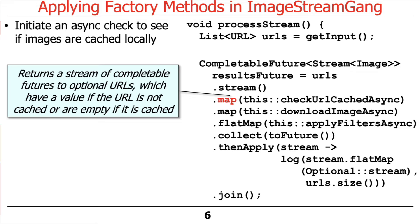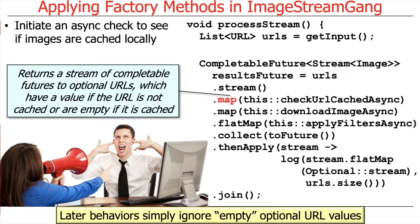The reasoning behind that is if we've already gone to the trouble of doing this before, we just want to ignore that URL. But if we haven't downloaded and filtered this URL before, then we want it to be present in the optional. The later behaviors here that come after this are always going to ignore empty optional values — whether optional URLs or optional images or whatever. That's what we do with empty optionals: we just ignore them.